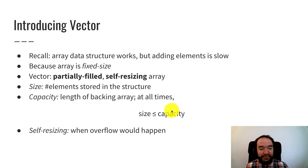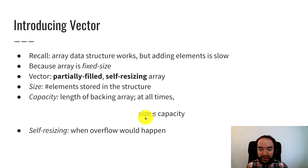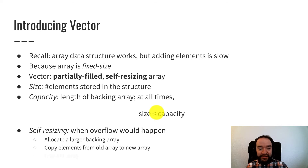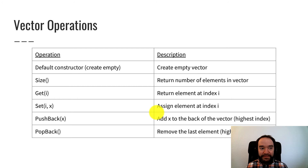The self-resizing idea is: if we would violate this invariant — meaning if we add one more element to the structure and that would make size greater than capacity — then we don't just break. Instead, what we do is allocate a larger backing array, copy everything from the old array into the new one, and free the old array so there's no memory leak.